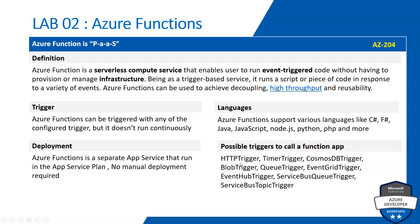The possible triggers to call a function app include: HTTP trigger, timer-based trigger, Cosmos DB trigger, Blob trigger, Queue trigger, Event Grid trigger, Event Hub trigger, Service Bus Queue trigger, and Service Bus Topic trigger. We'll talk about a few of these in the practical demo session.